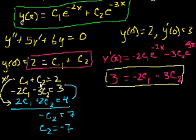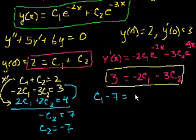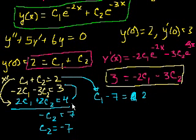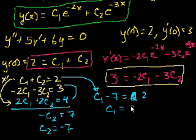Substituting c2 equals minus 7 back into the first equation, c1 plus minus 7 equals 2, which gives us c1 equals 9.